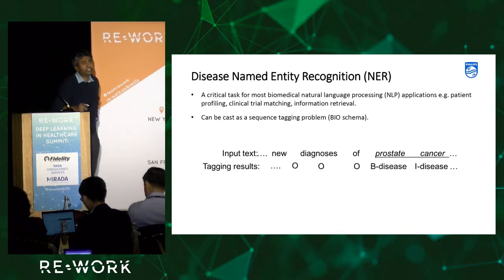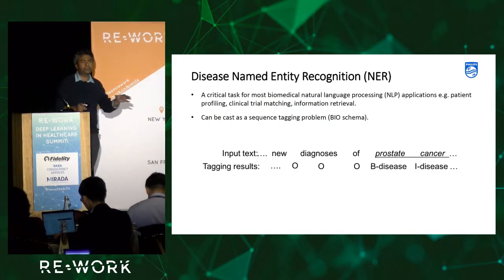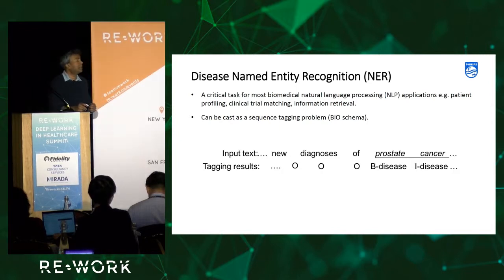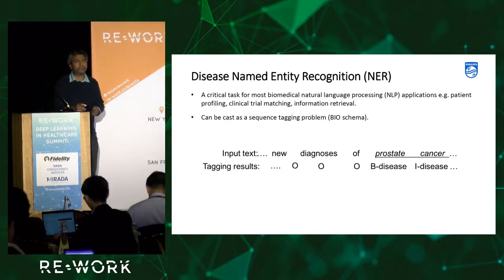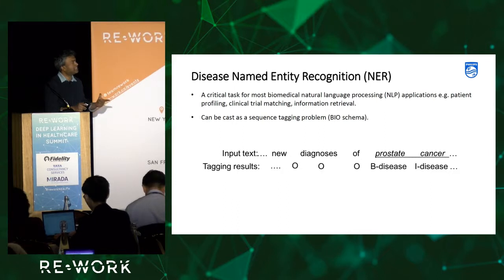For information retrieval, you can tag biomedical publications with disease names so that indexing systems can use that information in knowledge bases. This can be cast as a tagging problem — specifically sequence tagging, which is another important NLP problem in this area.